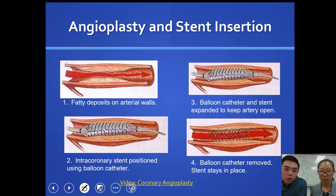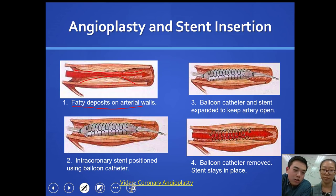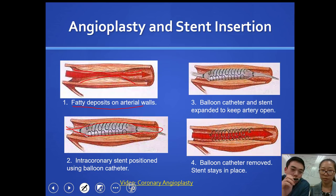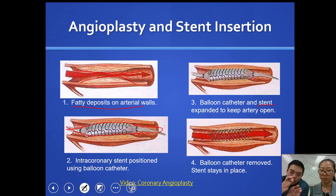Angioplasty and stent insertion: when fatty deposits restrict blood flow in an artery, doctors insert a balloon catheter with a metal mesh stent around it. They expand the balloon inside the artery, which pushes the plaque aside. The balloon is then removed, leaving the stent in place. The stent adds rigidity to the artery and prevents it from closing up too much, restoring blood flow.